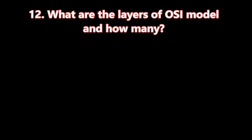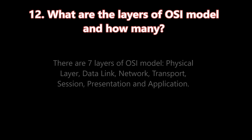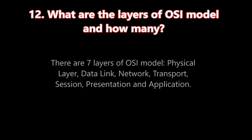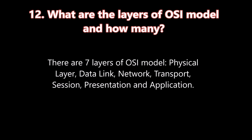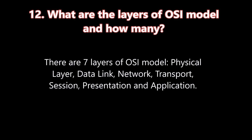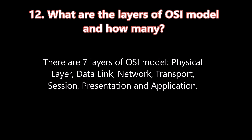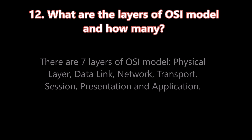Question number twelve: What are the layers of the OSI model and how many are there? There are seven layers of the OSI model: Physical layer, Data Link, Network, Transport, Session, Presentation, and Application.